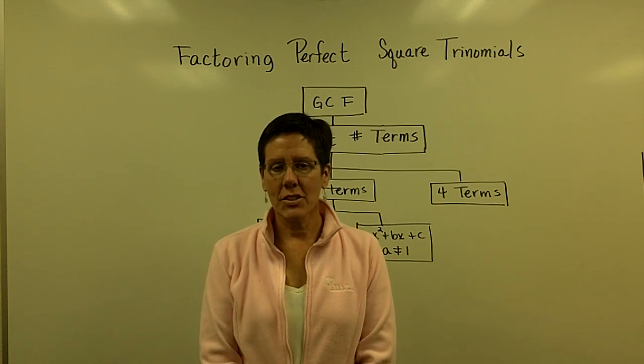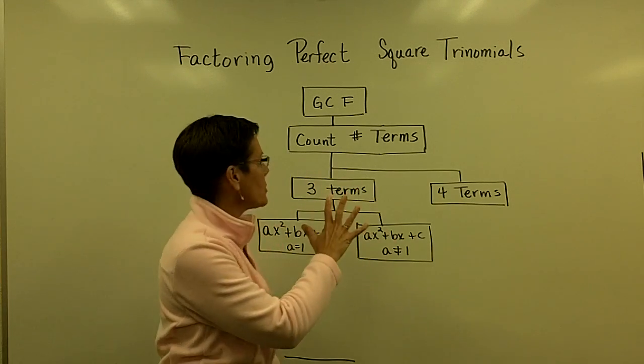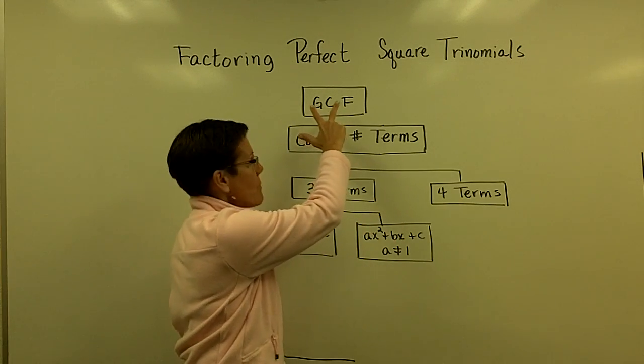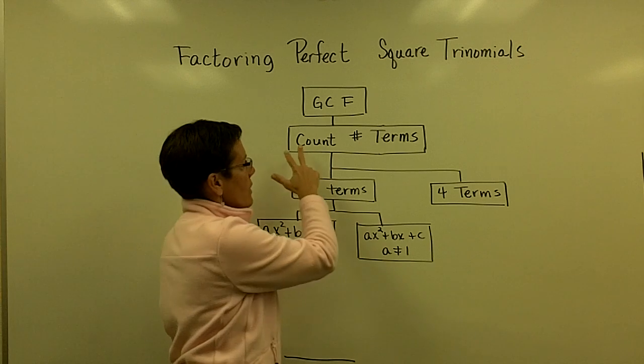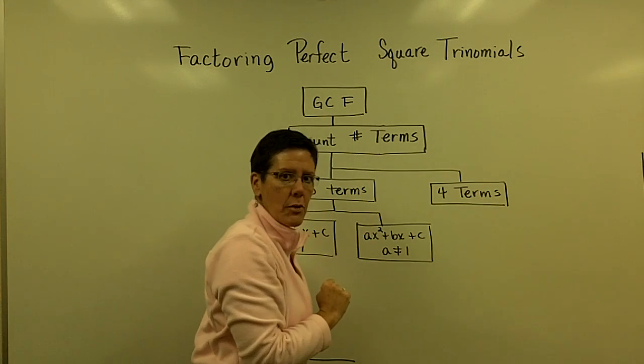Let's continue our study on factoring trinomials. So far today, remember our flow chart, we always look for the greatest common factor in any polynomial, and then we count the number of terms. If there are four terms, we factor by grouping.